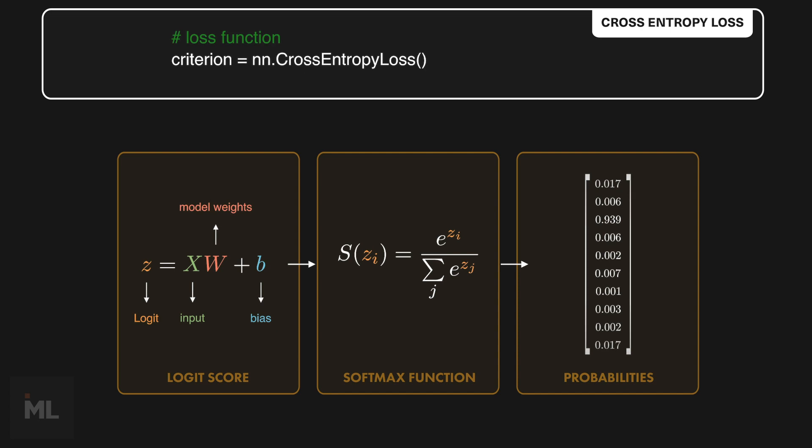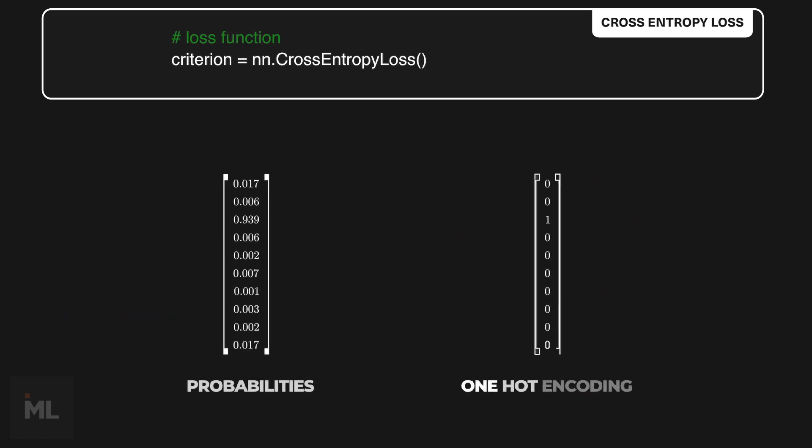In this way, we can directly compare it to the one hot-encoded vector that corresponds to your labels using cross entropy. This is the mathematical definition of cross entropy.